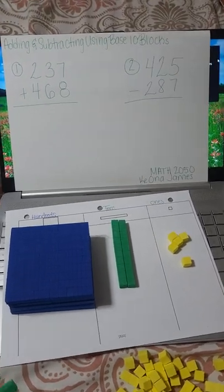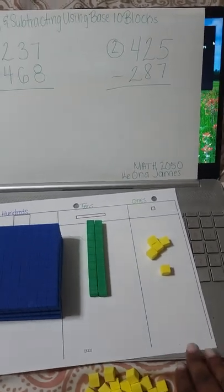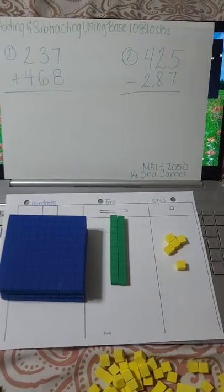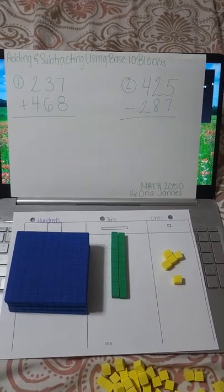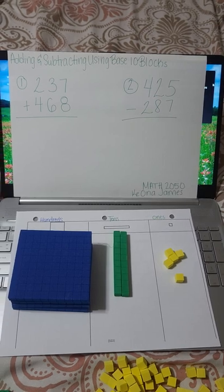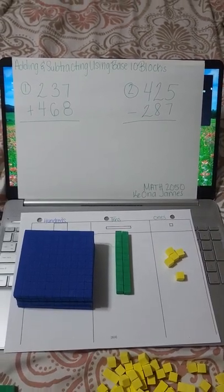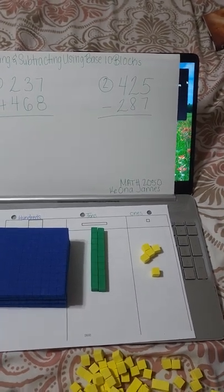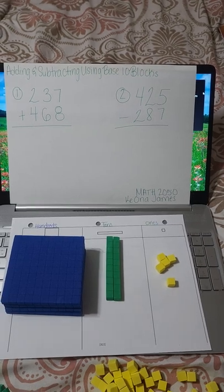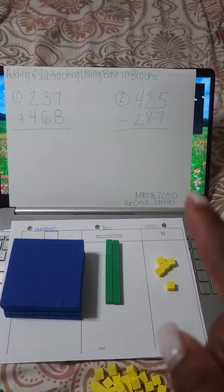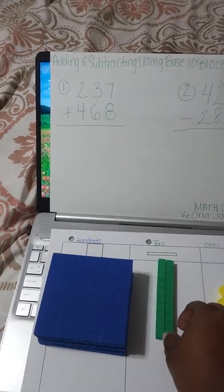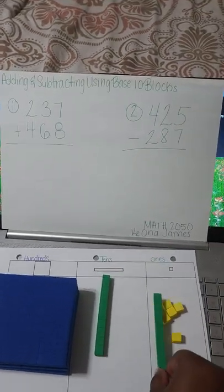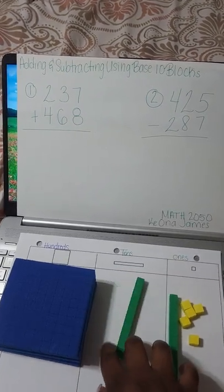Now we're going to subtract using our blocks. We know it's already set up for our top number, which is four hundred and twenty-five, and we want to subtract two hundred and eighty-seven from that number. We need to subtract seven from the ones place. In order to subtract seven from the five, we know that we have to borrow, so we're going to borrow a ten from the tens, and that will give us fifteen ones.